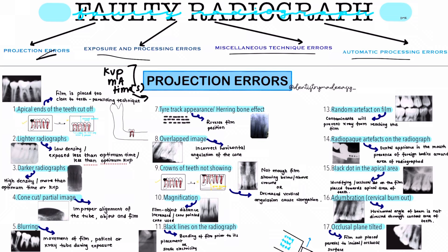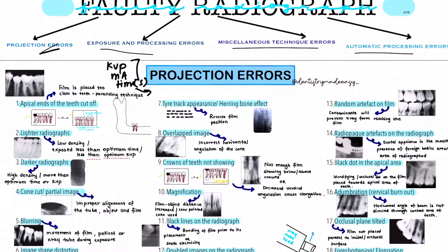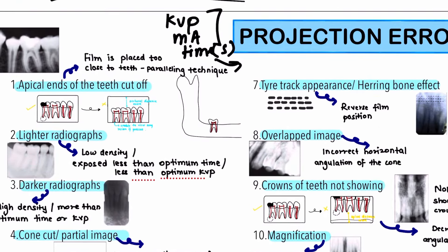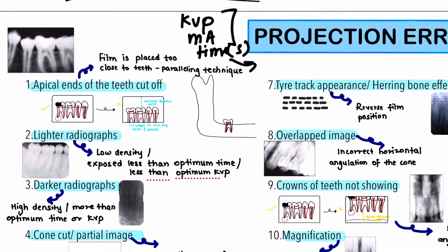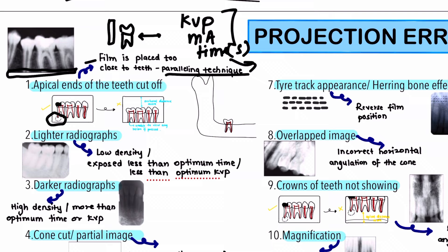The first projection error is about the apical ends of the teeth getting cut off. This is caused because the film is placed too close to the teeth in the maxillary arch when using the paralleling angle technique, causing the apical ends to get cut off. This can be avoided by placing the film at an appropriate distance, or you can use the bisecting angle technique in the case of the maxillary arch.